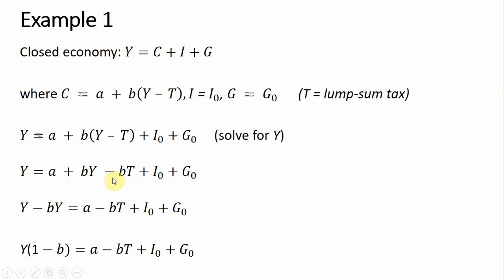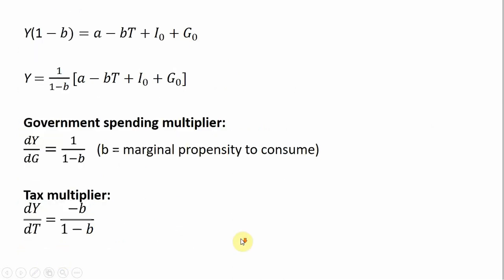Now we want to move this BY term over to the left-hand side. Subtracting BY from both sides leaves us with this. The next step is to factor out the Y term on the left-hand side, so Y minus BY will simplify. After factoring the left-hand side, the final step is to divide both sides through by 1 minus B, which gives us this expression.